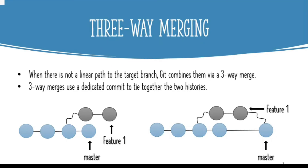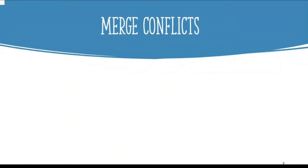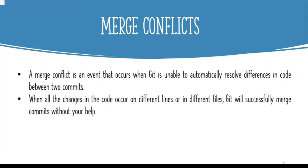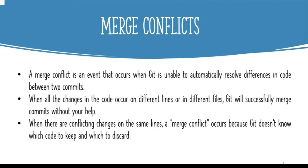What is a merge conflict? From time to time we might find that both branches we are trying to merge have made changes to the same part of the same file, and in such cases merge conflicts arise. A merge conflict is an event that occurs when git is unable to automatically resolve differences in code between two commits. When changes occur on different lines or in different files, git will successfully merge them, but when we edit the same parts of the same file, merge conflicts will arise and git will fail to understand which part to keep and which to discard.